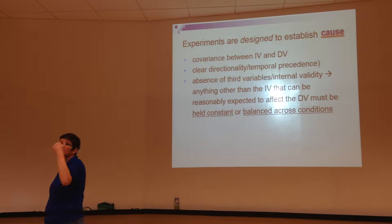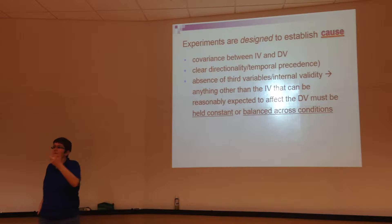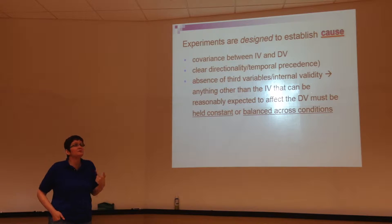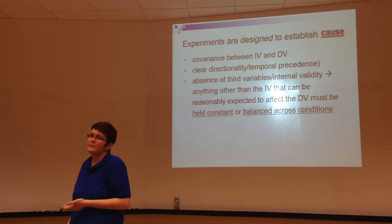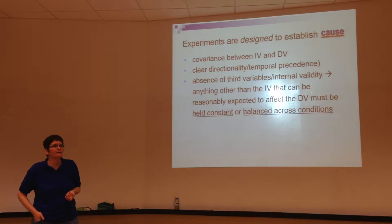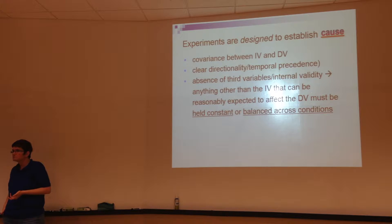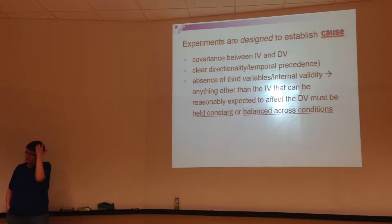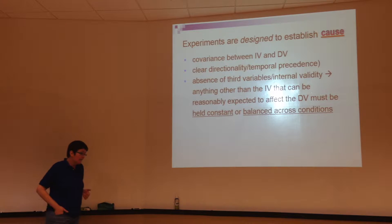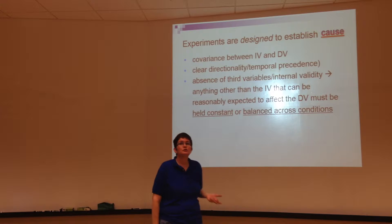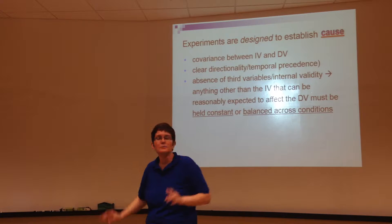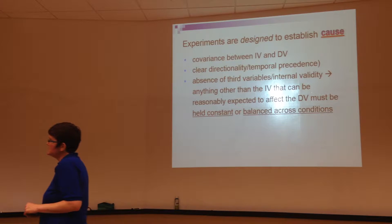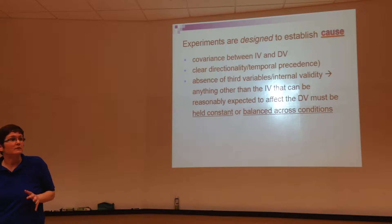Thirdly, we've got correlation, time order relationship, and then we have to have an absence of third variables, meaning there's no other variable that could be causing the changes in the dependent variable besides our independent variable. Experiments are designed with this in mind — they're all about control. We're trying to eliminate any other possible explanation for changes in the dependent variable except the independent variable.